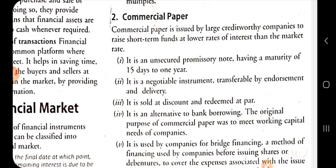The first feature of commercial paper is that it is an unsecured promissory note having a maturity of 15 days to 1 year. The second feature is that it is a negotiable instrument transferable by endorsement and delivery, meaning it can be transferred easily to others.